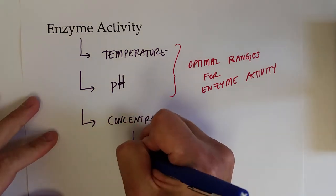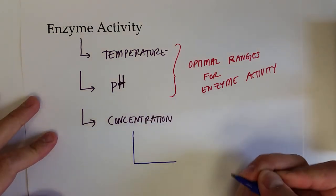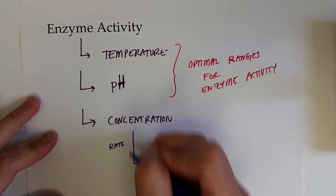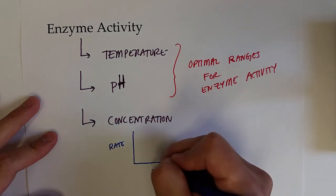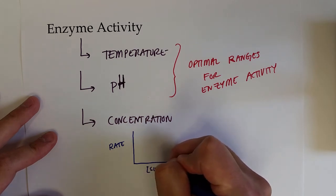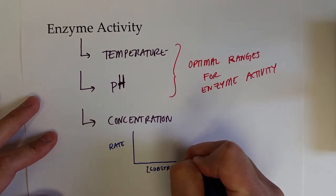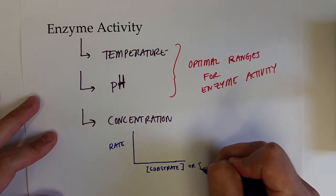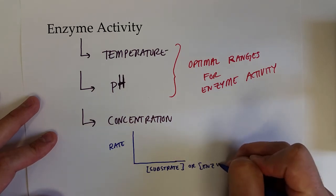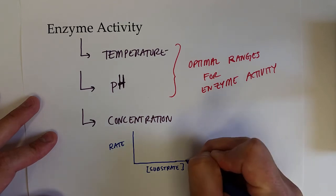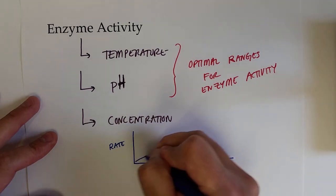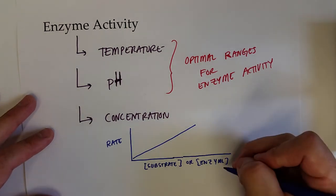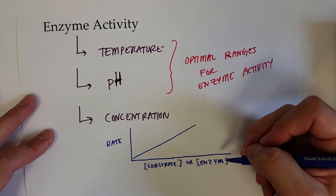Concentration is usually a linear process in that the rate of the chemical reaction would increase with the increasing concentration of substrate or enzyme. So there's usually a linear relationship unless of course the ratios are off.